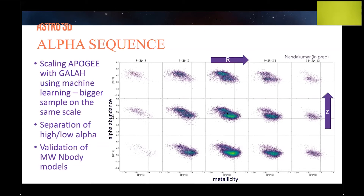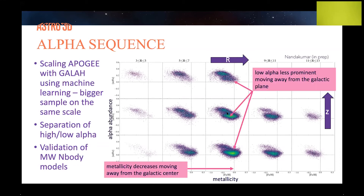Qualitatively, looking at the solar neighborhood: as we move away from the plane, the low-alpha sequence becomes less and less dominant and we start to see the emergence of the high-alpha population. On the other hand, moving out from the inner galaxy to the outer regions, the low-alpha population gets less and less metal-rich. This is an indication of how the galaxy has formed inside out.